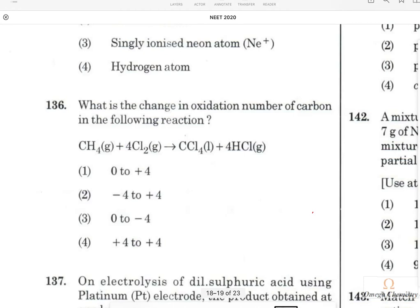Question 136 reads: What is the change in oxidation number of carbon in the following reaction? Carbon is in the minus 4 oxidation state because it is more electronegative than hydrogen, whereas in carbon tetrachloride it is in the plus 4 oxidation state because chlorine is more electronegative than carbon. So it is minus 4 to plus 4, and option 2 is the right answer.